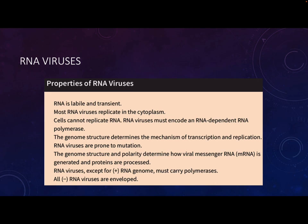RNA viruses are more unstable and more prone to mutation. The classic example we've been living through is SARS-CoV-2, the RNA-based virus that causes COVID-19 - we've seen it mutate constantly, from Delta to Omicron and beyond. When we talk about specific RNA viruses, we'll go into more detail about how they replicate, especially when that's important for understanding that virus.